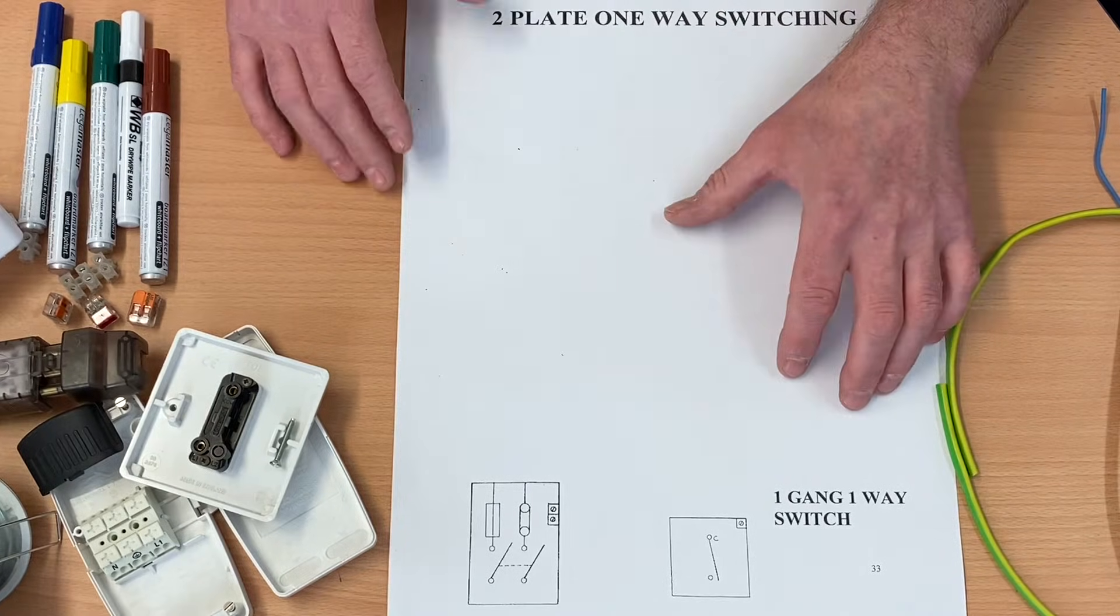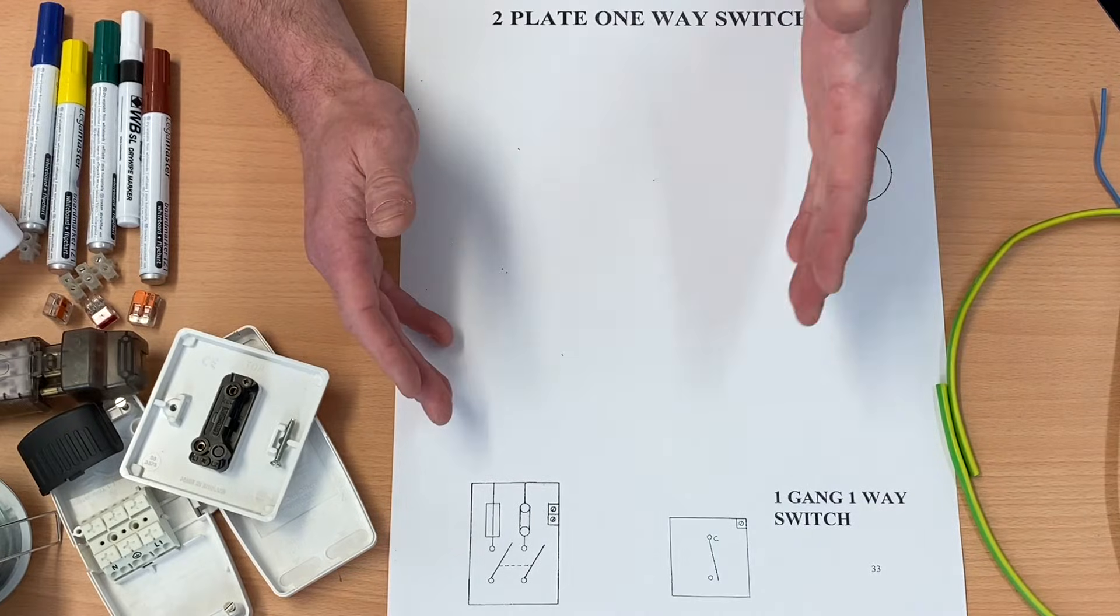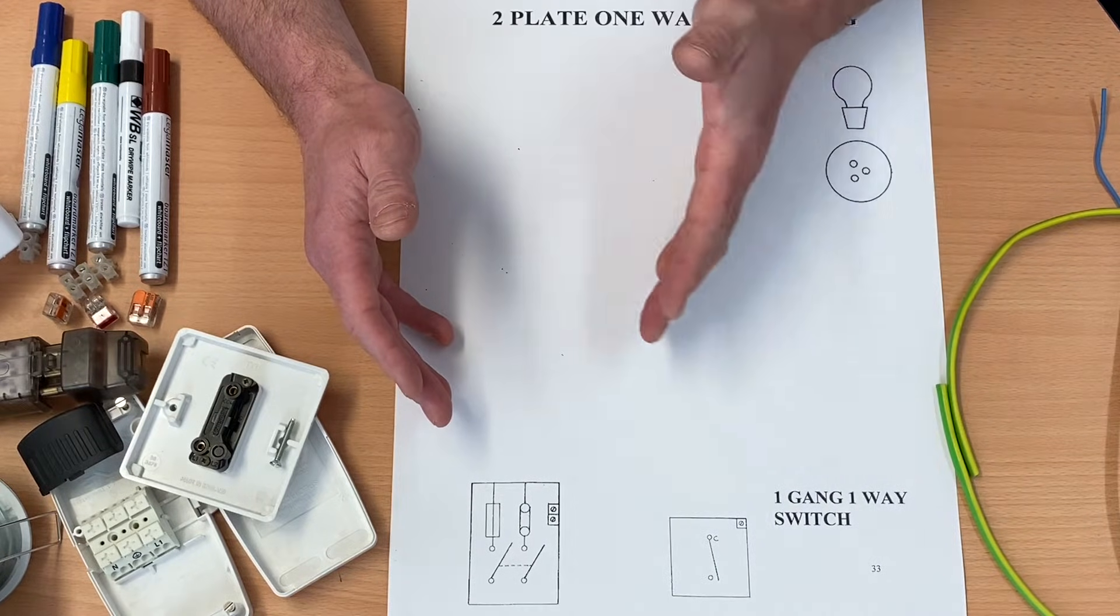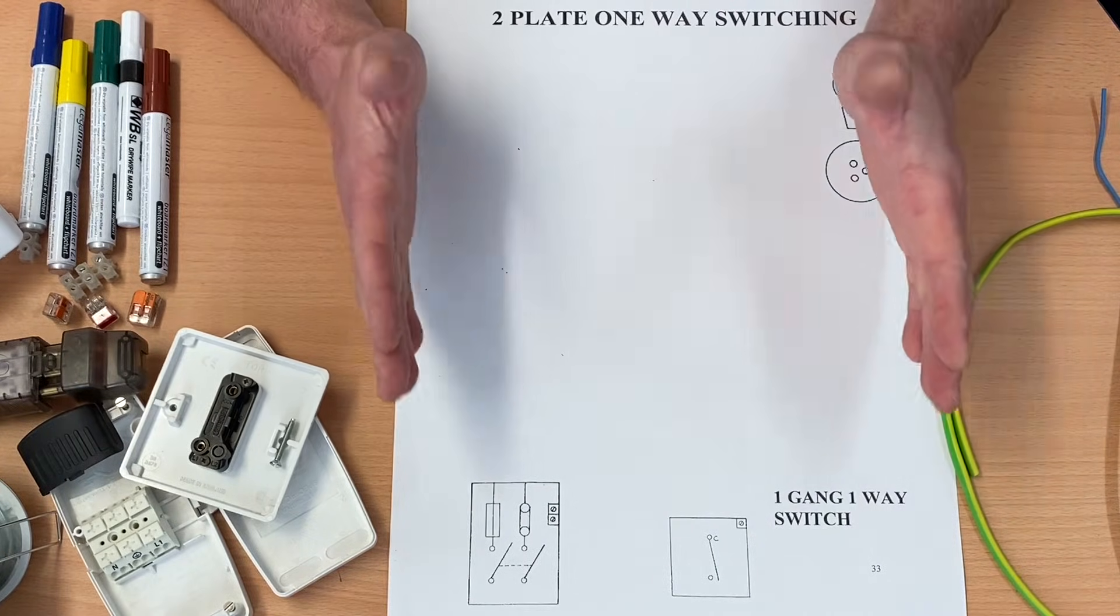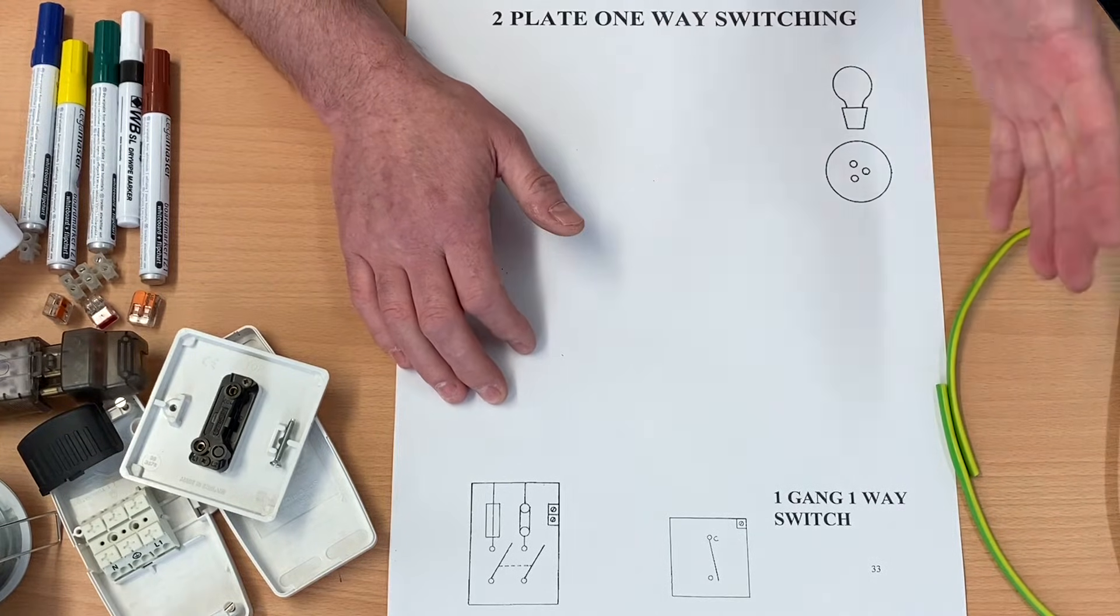So we're going to look at the wiring diagram for this. I've also done a nice video on the channel where I've cabled this in as a one way circuit, then a two way, and then a two way intermediate. And we're going to use these drawings, this one being the one way one, to support those videos that are on the channel.